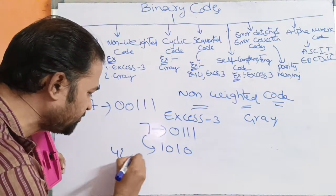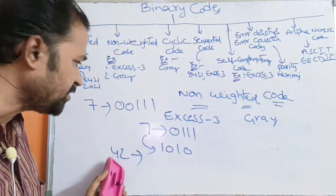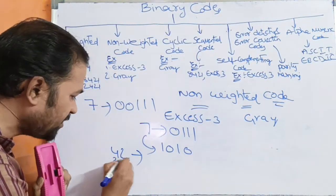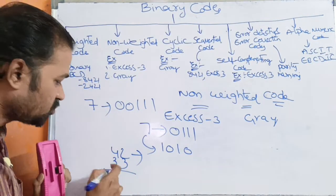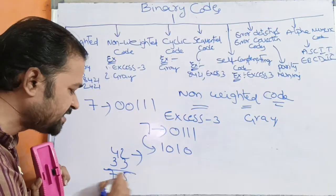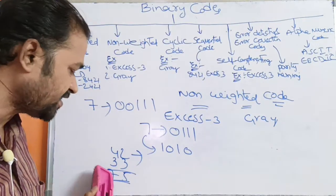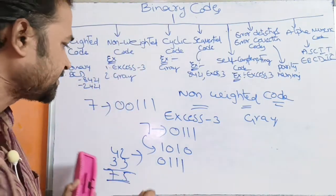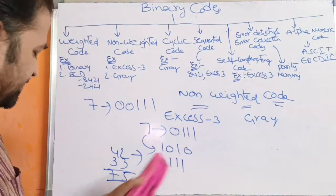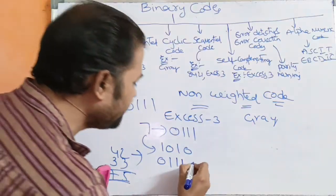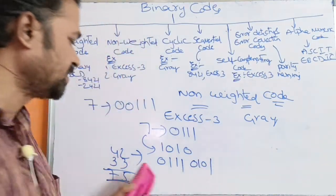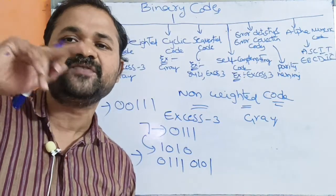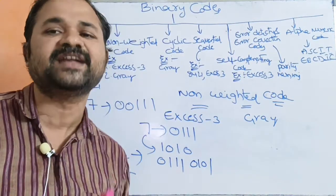Let the number be 42. In XS3 notation, we simply have to add 3 to each digit. So 4 plus 3 means 7, and 2 plus 3 means 5. How we can represent 7? 7 means 4 plus 2 plus 1, so 0 1 1 1. And 5 means 4 plus 1, so 0 1 0 1. So 42 in XS3 notation is 0 1 1 1 and 0 1 0 1. XS3 means simply we have to add 3 to each and every digit.